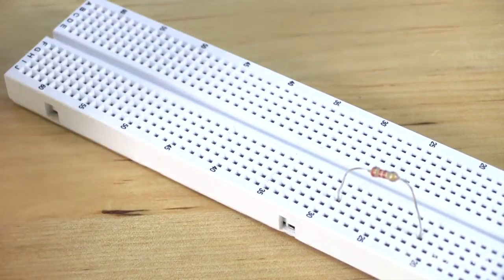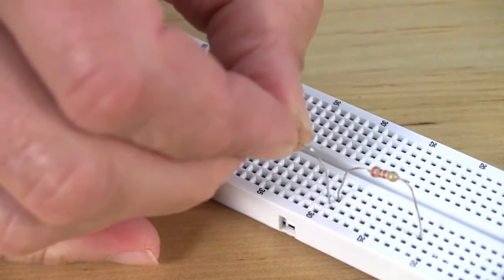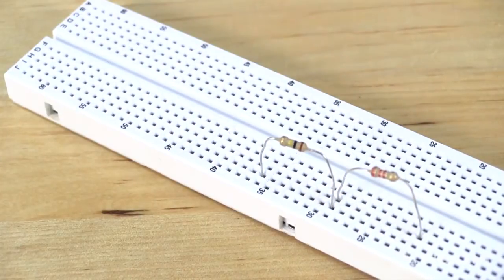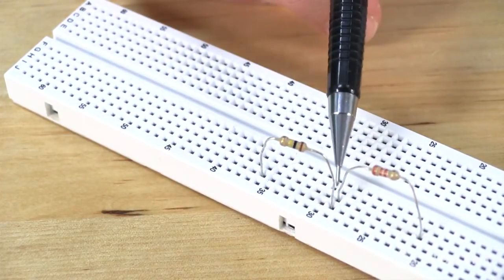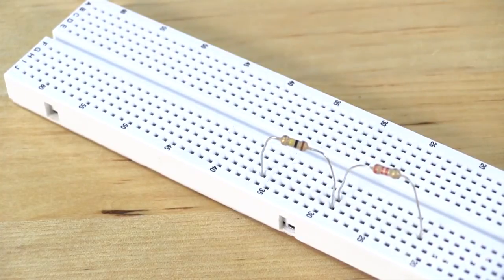For example, if I want to connect a second resistor to this terminal of this resistor, I simply plug one terminal of this resistor into a hole in the same row as the terminal that I want to connect to. Now these two terminals are connected, these two terminals are isolated from one another.